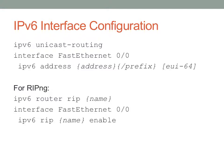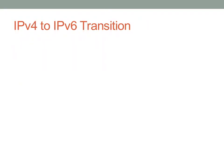For RIP Next Generation, it's pretty simple. You enter 'IPv6 router rip' followed by the name of the RIP process. Unlike OSPF and EIGRP, which use process or autonomous system numbers, RIP processes for IPv6 use a name. Then you can enable IPv6 RIP on an interface by entering 'IPv6 rip,' the name of the process, and then 'enable.'